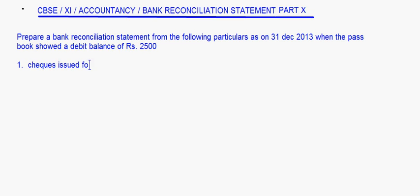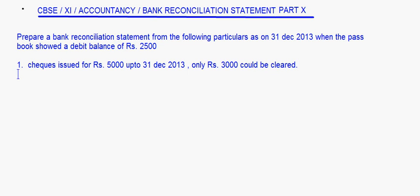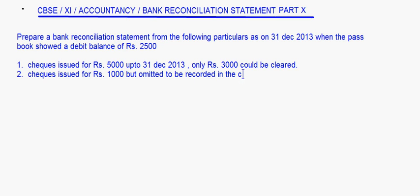Checks issued for Rs. 5,000 after 31st December 2013, only Rs. 3,000 could be cleared. Second, checks issued for Rs. 1,000 but omitted to be recorded in the cashbook.